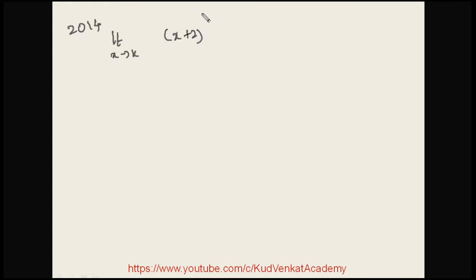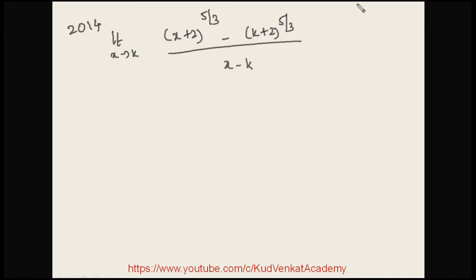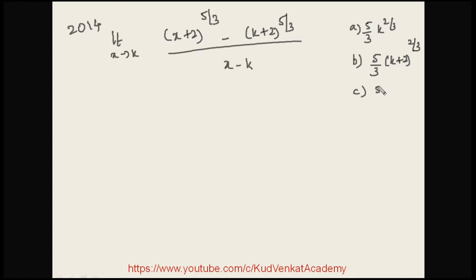The question is: limit x → k of [(x+2)^(5/3) - (k+2)^(5/3)] divided by (x - k). The options are: (a) 5/3 · k^(2/3), (b) 5/3 · (k+2)^(2/3), (c) 5/3 · (k+2)^(5/3), and (d) none. When you substitute x = k in the denominator, the limit becomes undefined, so we apply L'Hôpital's Rule.